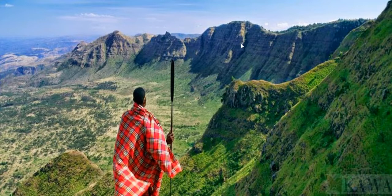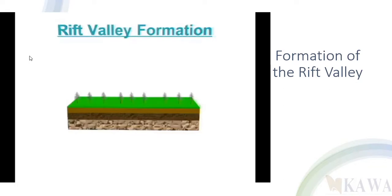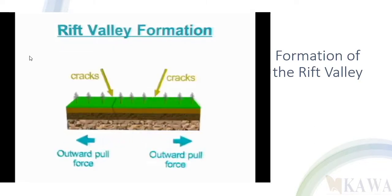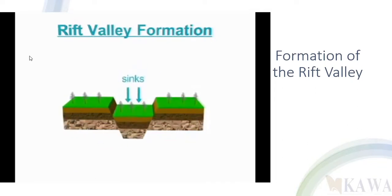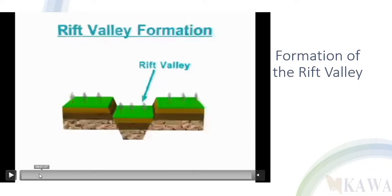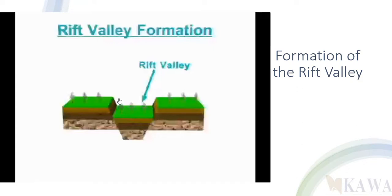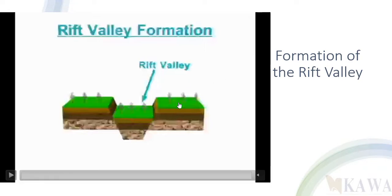These are the sides of the rift valley known as escarpments — fault scarps and many others. This is the floor of the rift valley. Now let's look at the video of the formation of the rift valley. Those cracks are formed, the central block sinks — this is the process of tension formation. Another process is compression, where forces pull and push from different sides until the central block goes up.